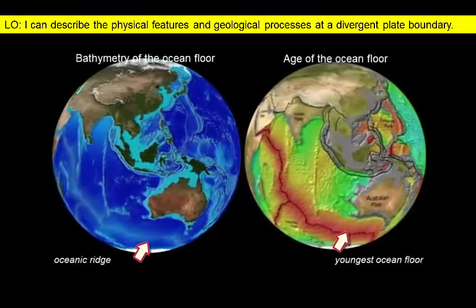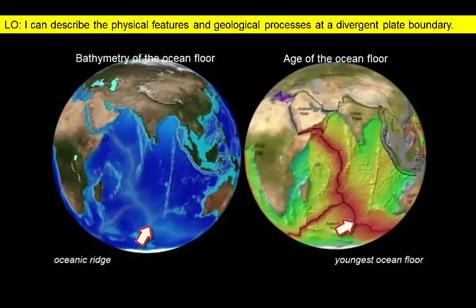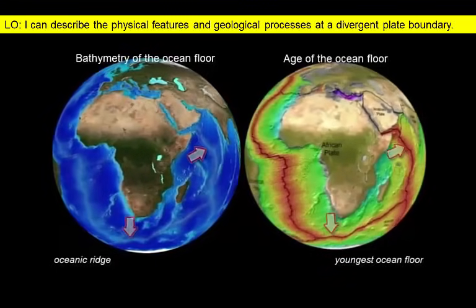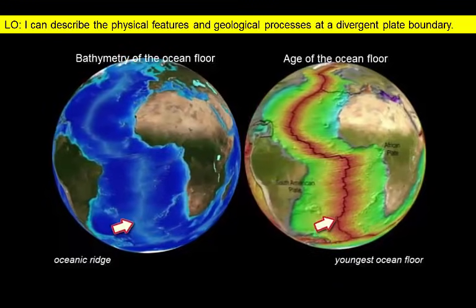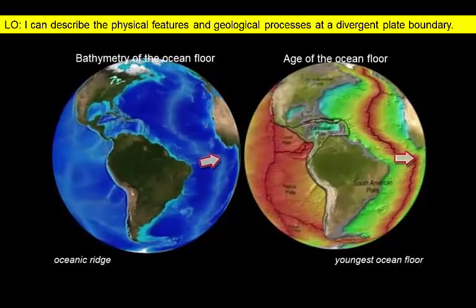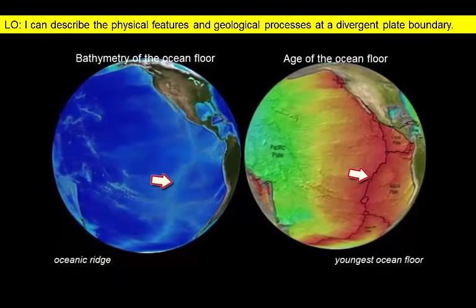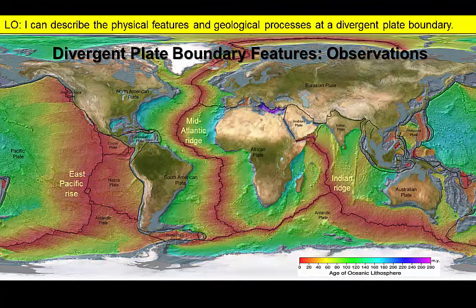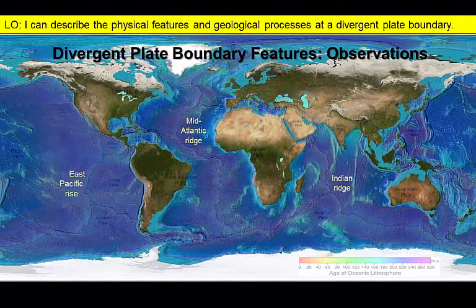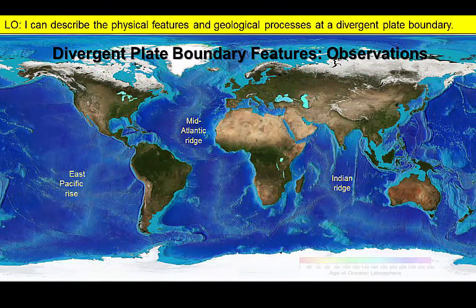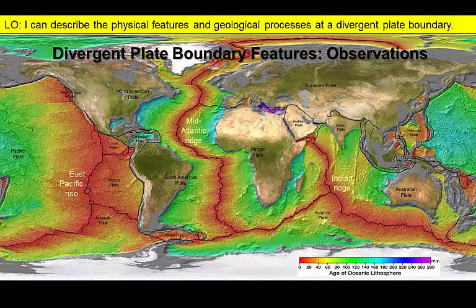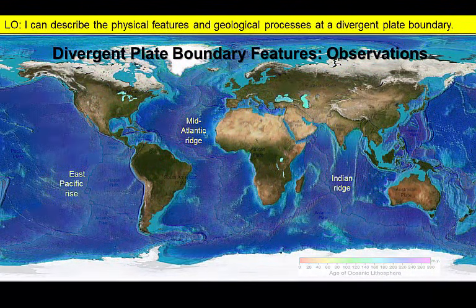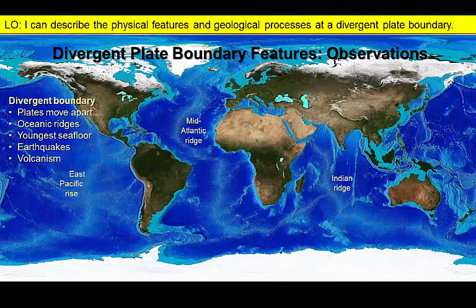We can compare the bathymetry and the age of the ocean floor on these spinning globes. It's relatively easy to identify the divergent boundaries toward the center of the ocean basins using the features we've just described. These patterns are even more apparent when we superimpose both maps. So our observations are that plates move apart at divergent plate boundaries, and these boundaries are typically home to oceanic ridges, young ocean floor, and earthquake activity.